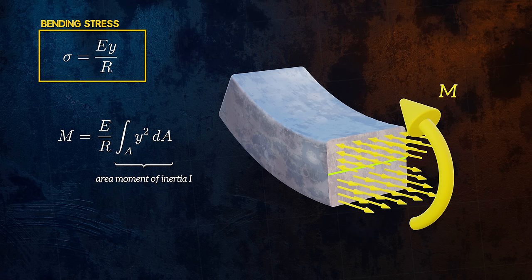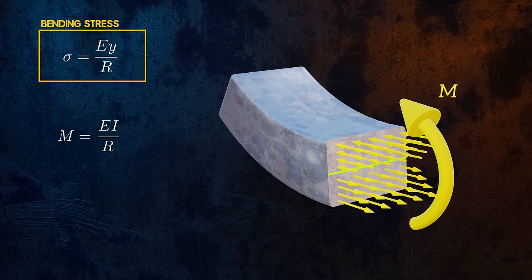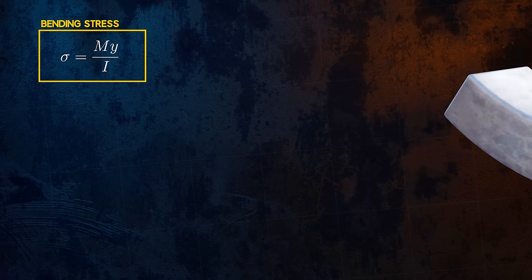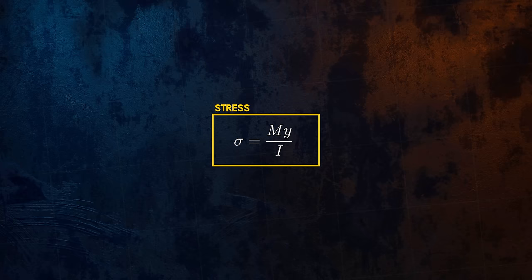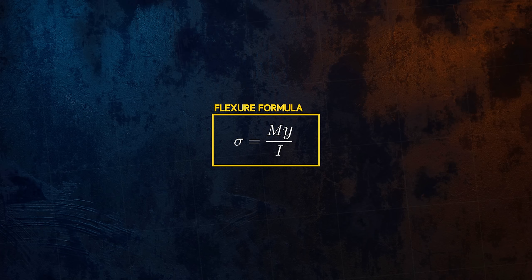This parameter, which I've covered in detail in a separate video, defines the resistance of a cross section to bending due to its shape, and is denoted using the letter I. We can combine this equation for the bending moment with the bending stress equation to obtain what is known as the flexure formula. Bending stress increases linearly as the bending moment and the distance from the neutral axis increase, and it decreases as the area moment of inertia increases.